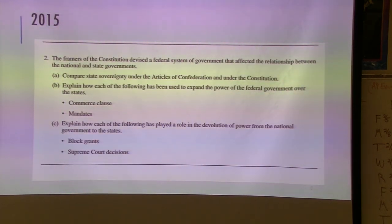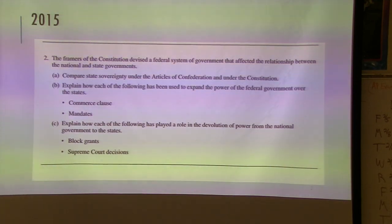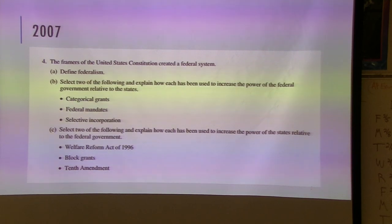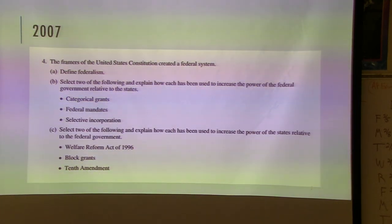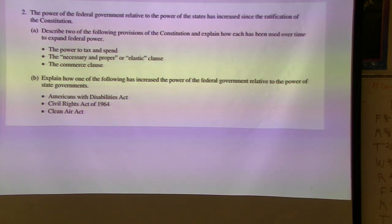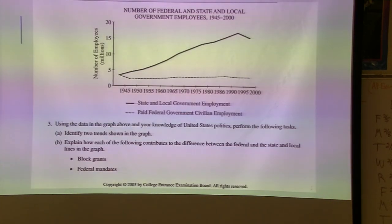You'll see some of the different review questions — block grants, Supreme Court decisions, categories of grants, federal mandates, block grants, the Tenth Amendment, the Elastic Clause, the Americans with Disabilities Act, the Civil Rights Act of 1964, the Clean Air Act — all the key terms. We'll come back to see more of these things.